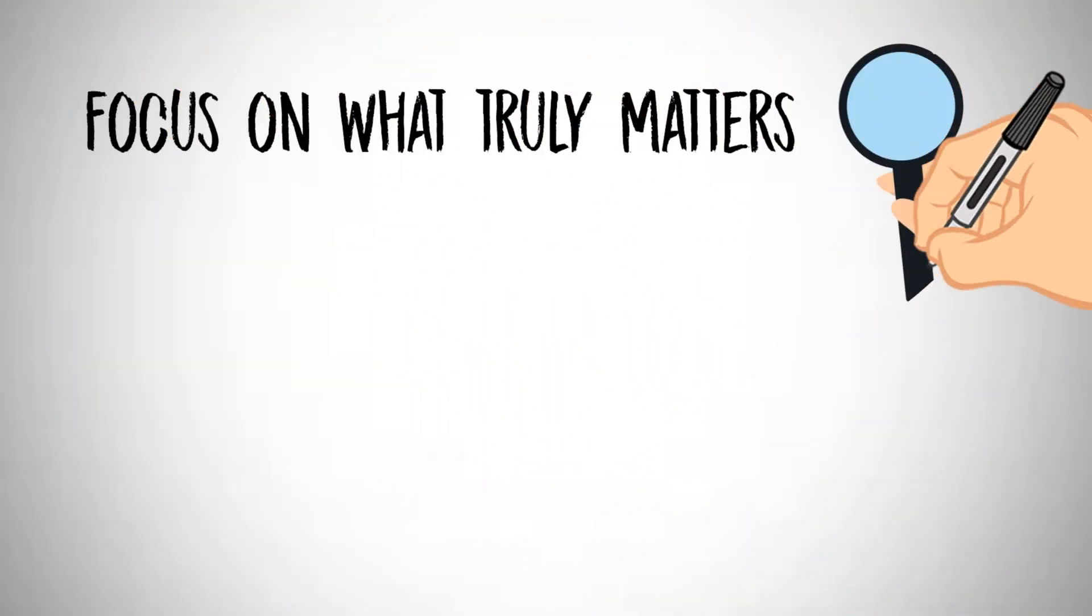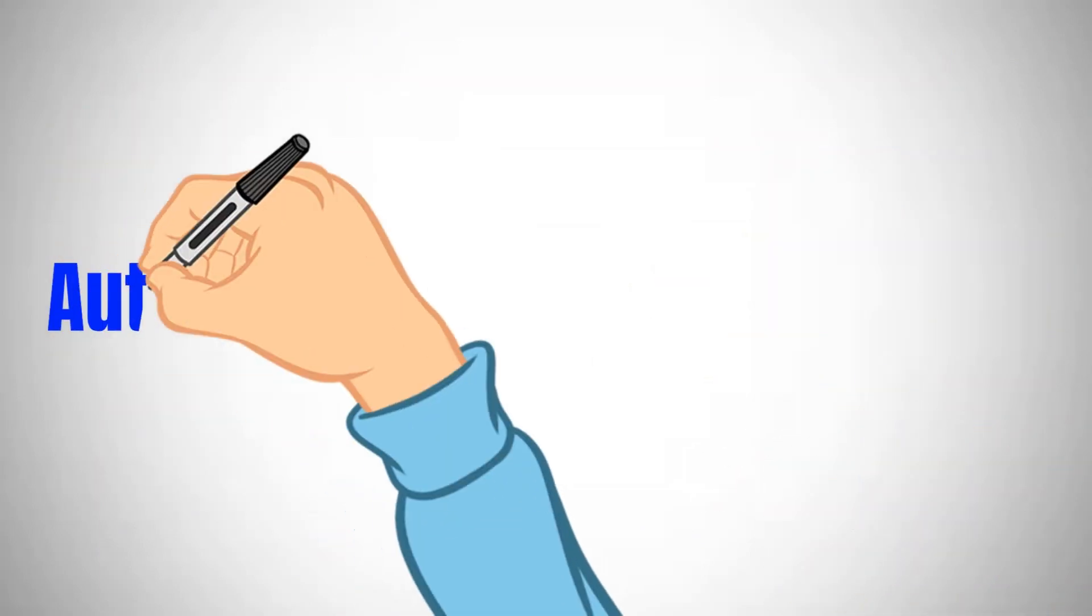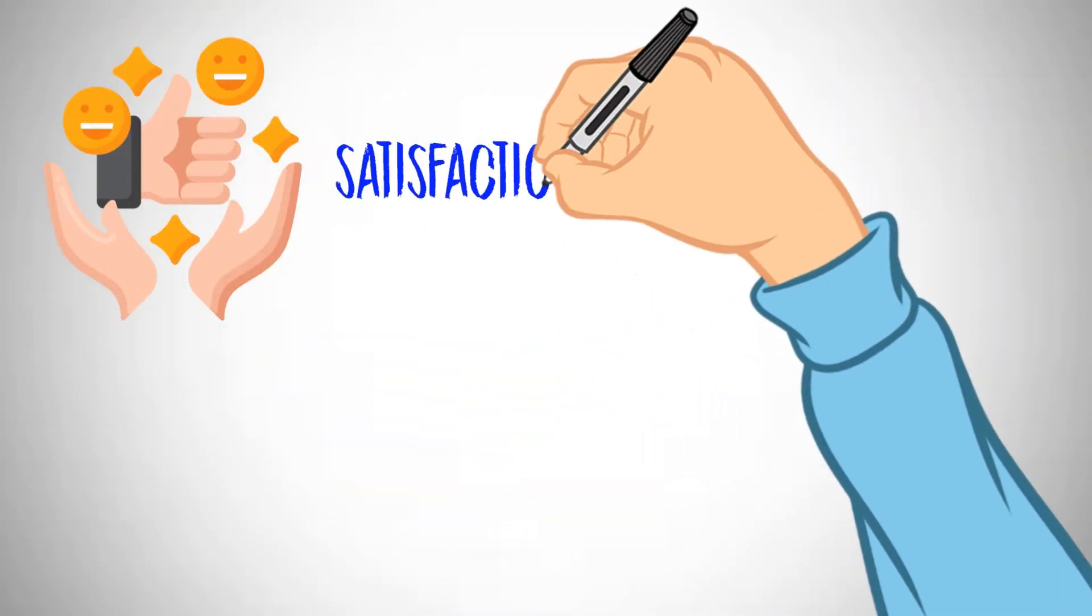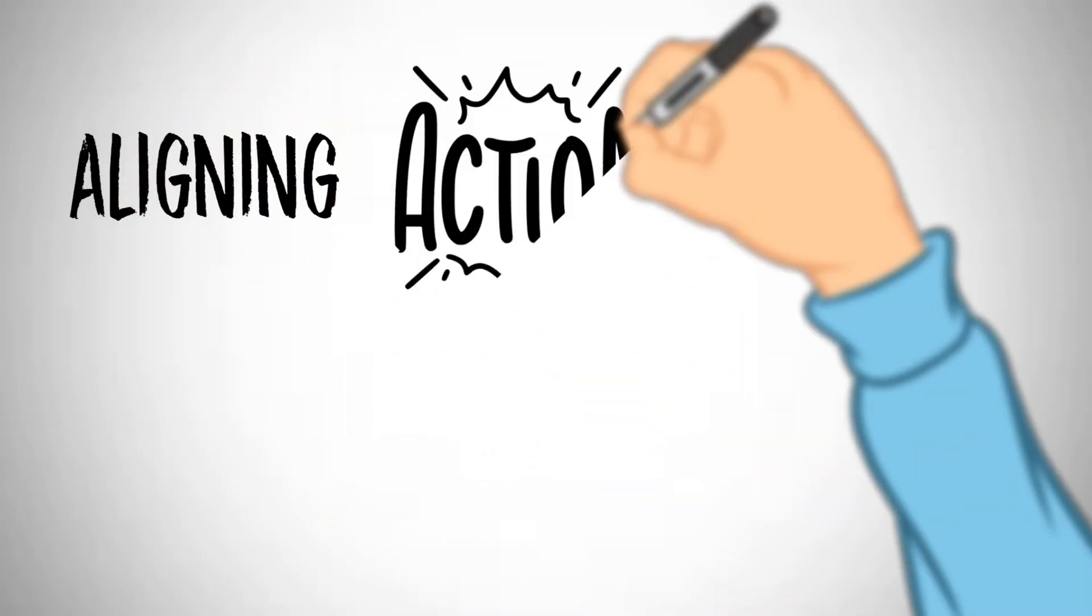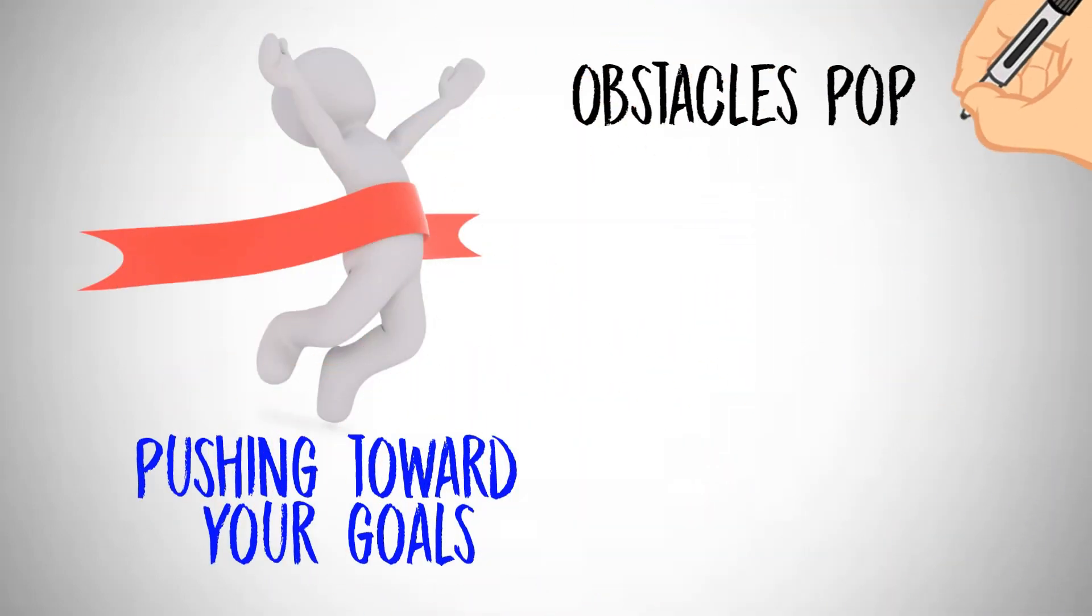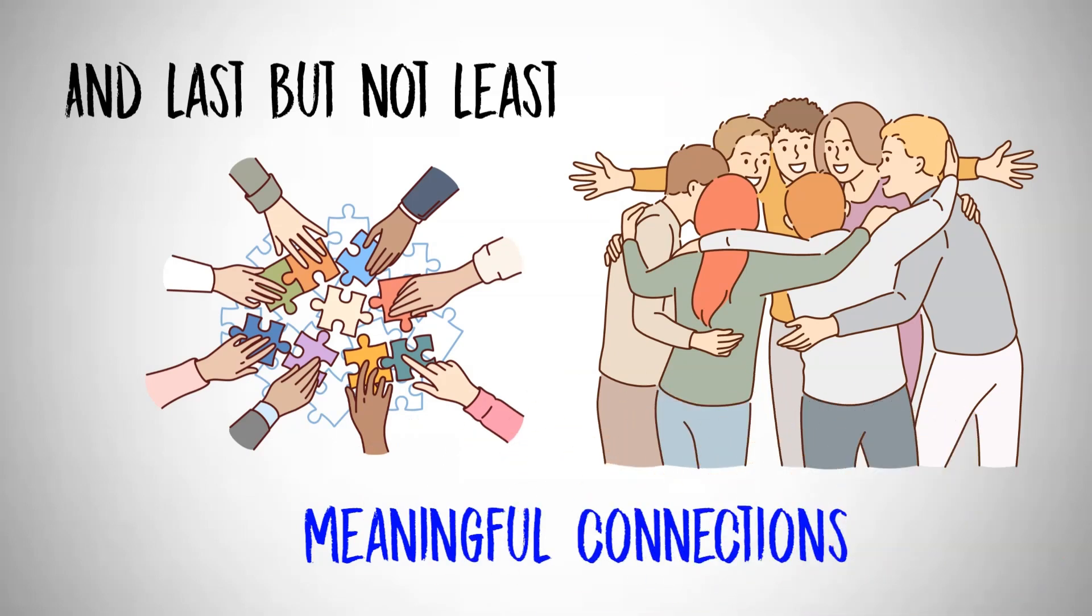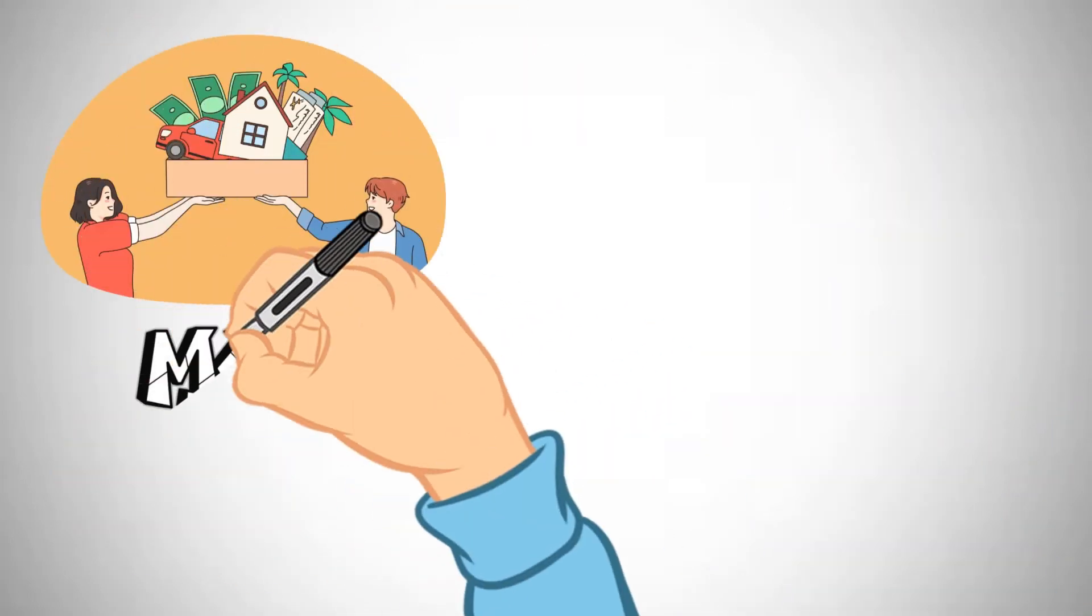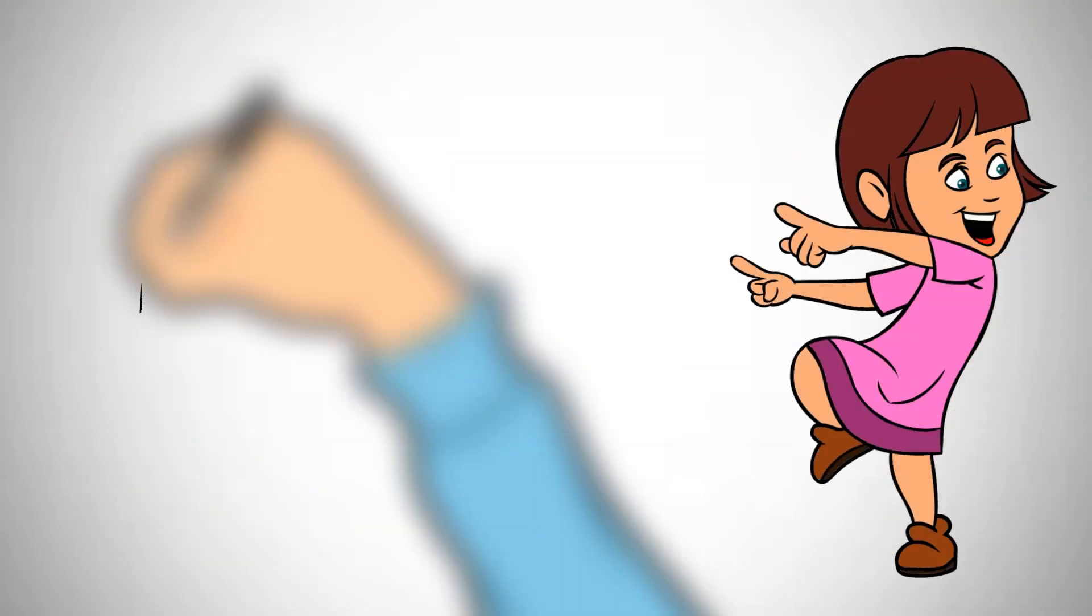When you focus on what truly matters, you're living life authentically. You're not pretending or trying to fit into someone else's mold. This authenticity can lead to deeper, more meaningful relationships. The cool part is that this kind of living brings satisfaction and happiness, even when life throws its challenges your way. It's all about aligning your actions with your core values, which makes you resilient. You'll keep pushing toward your goals, even when obstacles pop up. And last but not least, Manson is all for building meaningful connections with others. Prioritizing these relationships can lead to greater happiness and a strong sense of belonging.